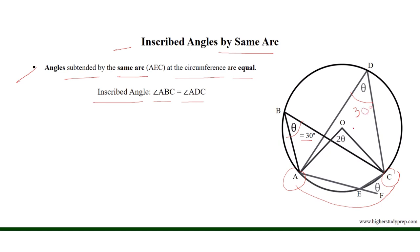It is given that angle ABC equals 30 degrees, so angle ADC is also 30 degrees. Both are inscribed angles with a measure of 30 degrees. The central angle AOC equals two times 30 degrees, which is 60 degrees, because the central angle is twice the inscribed angle.